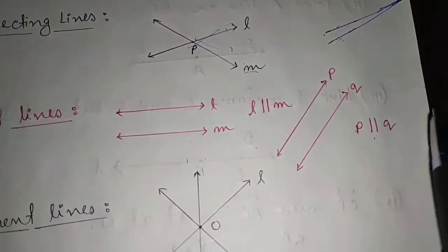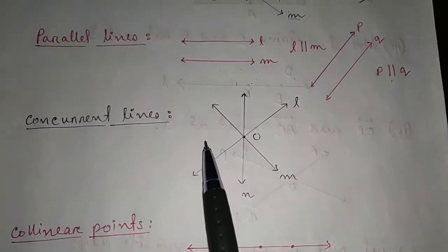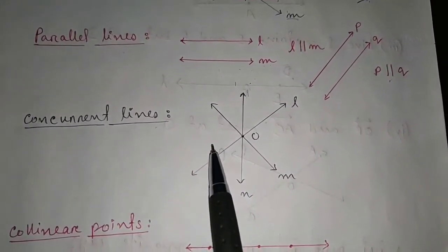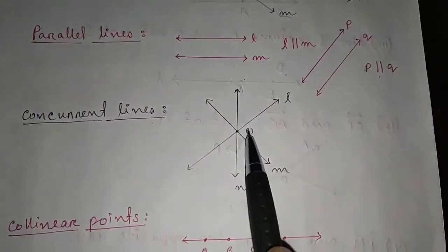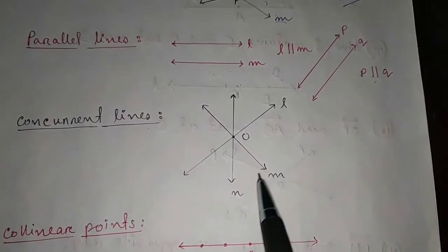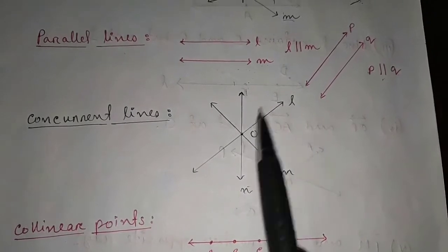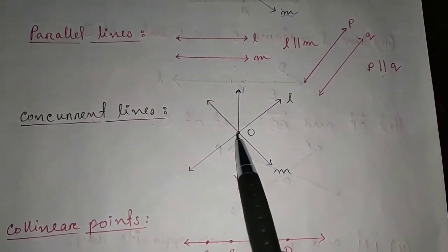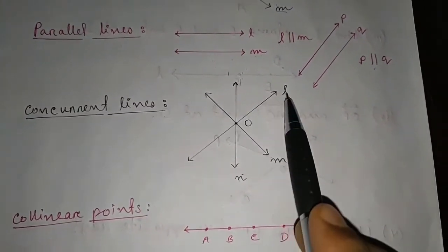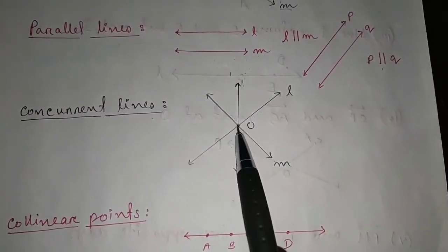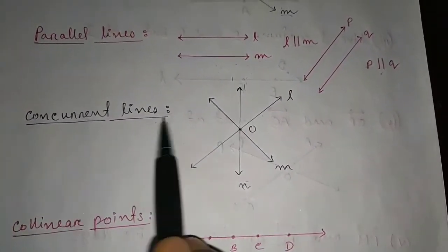Next is concurrent lines. Three or more lines are said to be concurrent lines if they all pass through a common point. You can see lines L, M, N — when three or more lines pass through the same point, they are known as concurrent lines. All lines are passing through a single common point O, so these are concurrent lines.